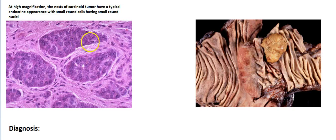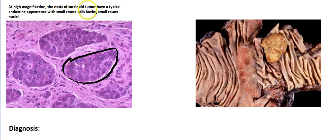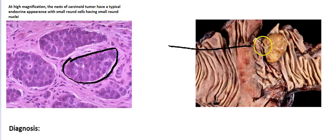Looking at histopathology, you'll find a collection of small cells, which is characteristic of neuroendocrine tumors. The nests of carcinoma have a typical endocrine appearance, with small round cells having small round nuclei. This is a gross specimen of a small intestine, and what it is occupying is a carcinoid tumor.